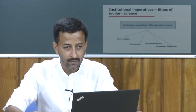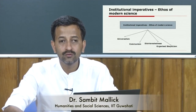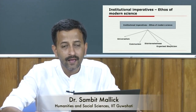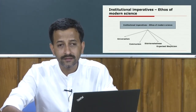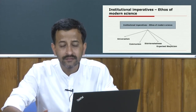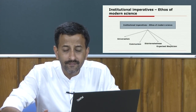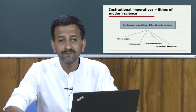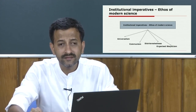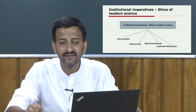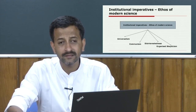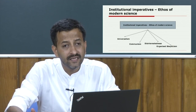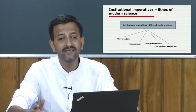Let us come to the second week module on this CSS MOOC course on science, technology and society. What we have done till now in the last week, we discussed the way technology, science and society have been conceived of, and how we tried to bring about a critical relationship between these three forces of production through different models and perspectives on STS: the linear model, the interactionist model, and the embedded model.